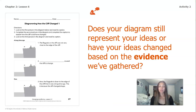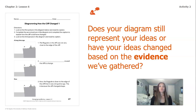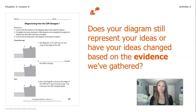Remember that a diagram is another way that we can show something bigger and it's just an easier way of showing it. Does your diagram still represent your ideas, or have your ideas changed based on the evidence we've gathered? We worked on this diagram in our first lesson of chapter 2, talking about what might have caused the cliff to change. I want you to stop and go back into your packet and look at this activity — see what you wrote down about what could have caused the cliff to change, and think about whether your ideas are still the same or if they have changed.